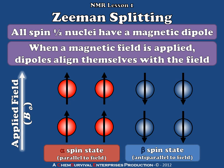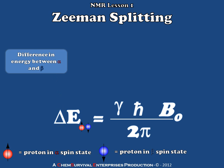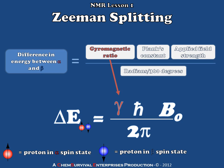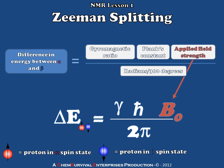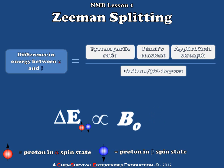Let's take a look at how we can treat Zeeman splitting mathematically. The Zeeman splitting is the difference in energy between the alpha and beta spin states, and we can calculate this difference in energy as a function of several things. First is the gyromagnetic ratio, which is the same for all of a particular type of nuclei — so all protons will have the same gyromagnetic ratio. Next is Planck's constant, which is also constant. The applied field strength also makes an appearance in this equation, and sometimes we throw in a 2 pi to help convert radians to degrees. On the right-hand side there are three constants and one variable, so combining the constants for a particular nucleus — let's say protons — we reach a proportionality where the Zeeman splitting, delta E, is proportional to the applied field, B0.